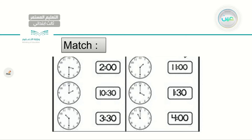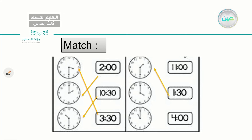Now let's match. I have the clocks to your left and the time to your right. First one: 3:30, half past 3. For the next one: it is 2 o'clock. And for the last one: it is 10:30 or half past 10. For the one to your right: 1:30 or half past 1. Then 4 o'clock. And 11 o'clock.